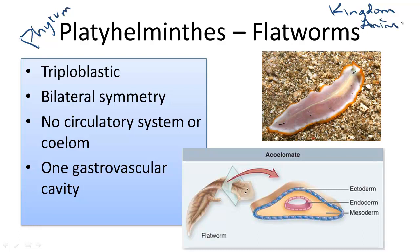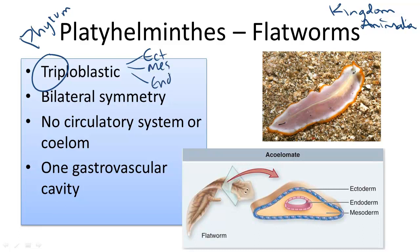Flatworms can be described by four main evolutionary features. One is that they are triploblastic, meaning there are three germ layers in early development: ectoderm, mesoderm, and endoderm.